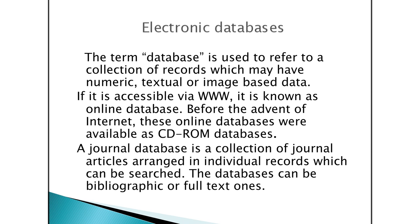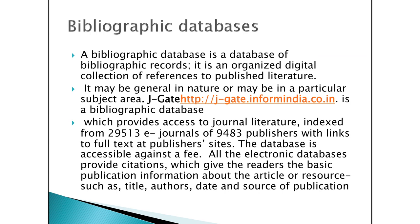Now we will be talking about electronic databases. The term is used to refer to a collection of records which may have numeric, textual or image-based data. If it is accessible via the web, it is known as an online database. Before the advent of the internet, these online databases were available as CD-ROM databases. A journal database is a collection of journal articles arranged in individual records which can be searched. The database can be bibliographic or full-text. A bibliographic database is an organized digital collection of references to published literature and may be general in nature or specific to a particular subject area.